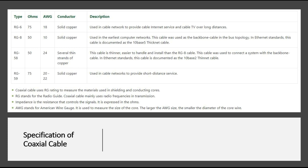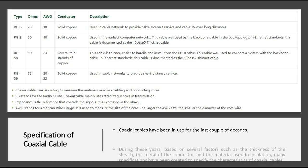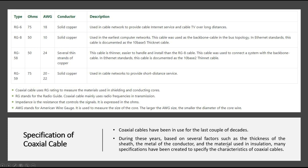Coming to the specifications of coaxial cable, there are several types such as RG6, RG8, RG58, RG59, and so on. You can go through the detail description of how each looks and where it is used. Over the years, based on factors such as the thickness of the sheath, the metal of the conductor, and the material used in insulation, many specifications have been created. Details on RG ratings, ohms, and AWG are provided in the reference material.